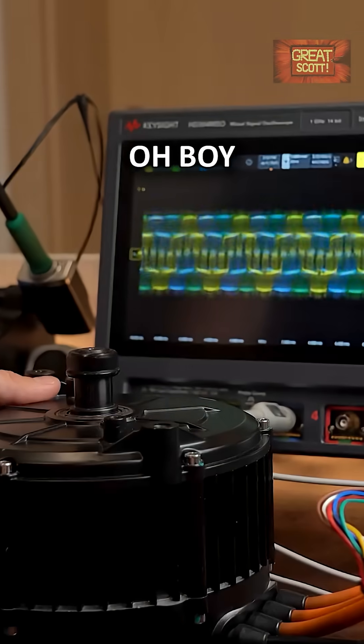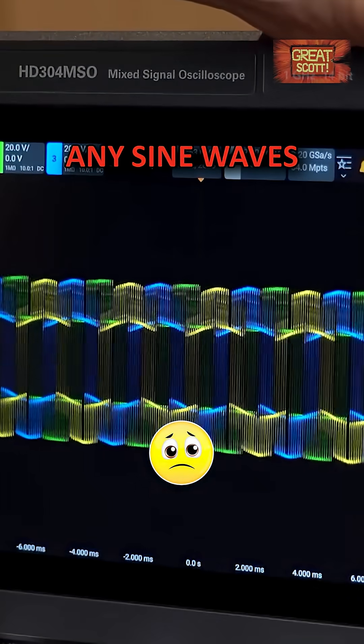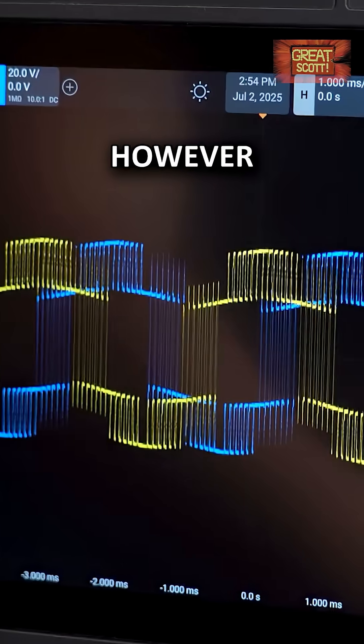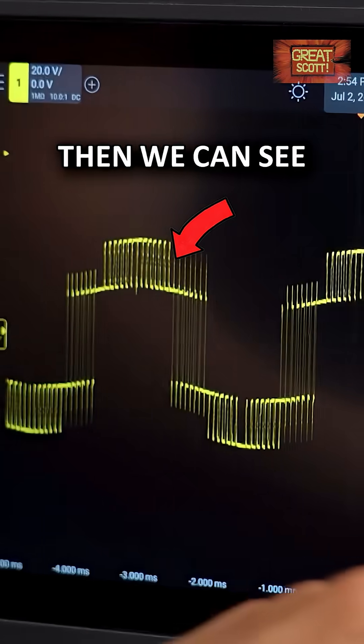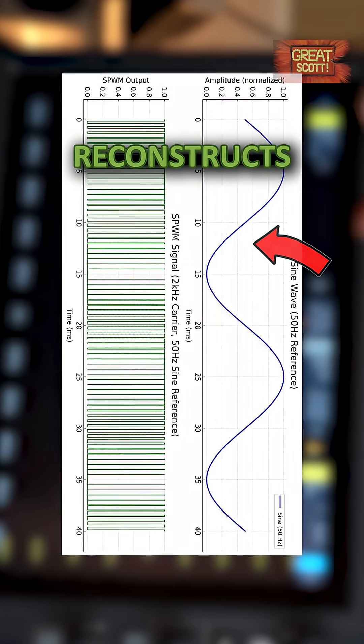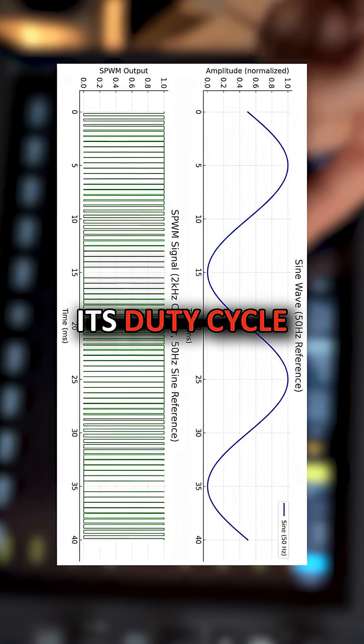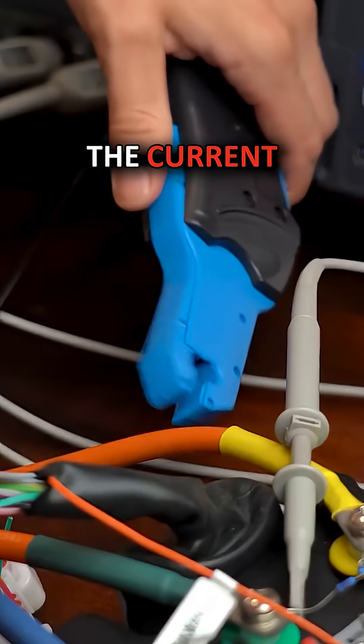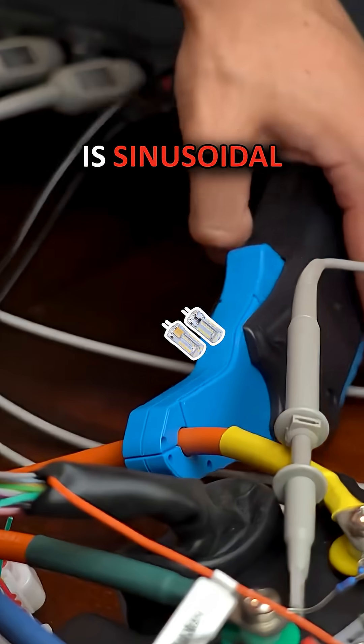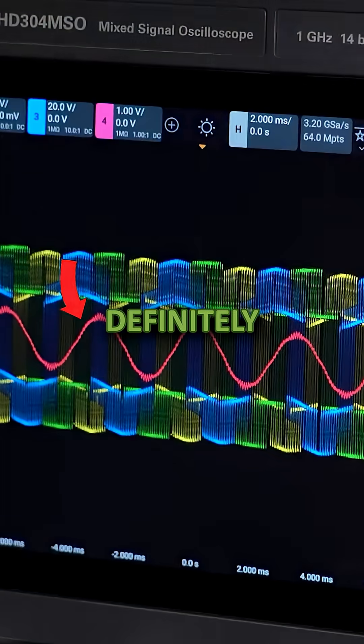Oh boy, this all doesn't really resemble any sinewaves at first sight. However, when having a closer look, we can see the controller basically reconstructs a sinewave with a PWM signal by varying its duty cycle. This should mean the current flowing through the coils is sinusoidal. And yes, that is definitely the case.